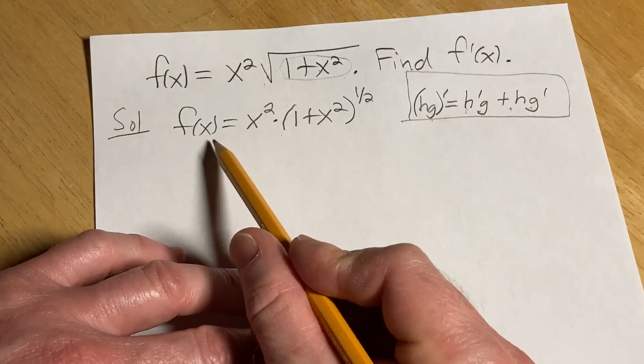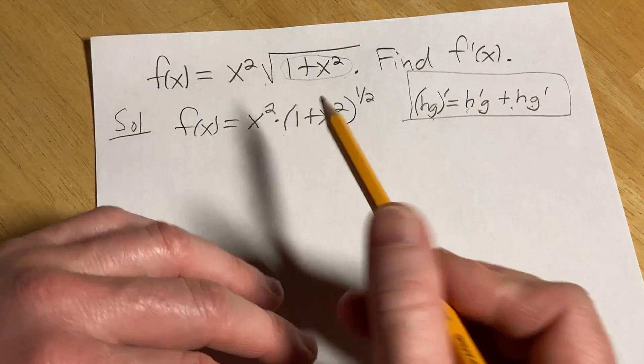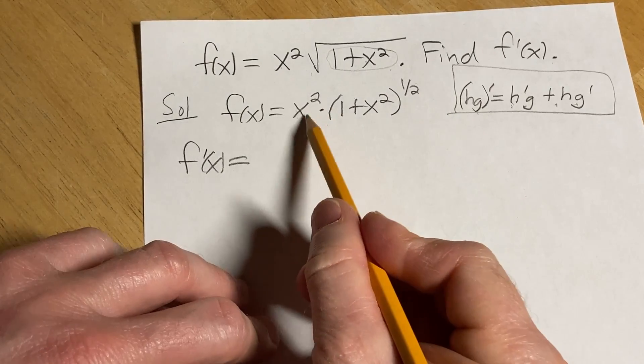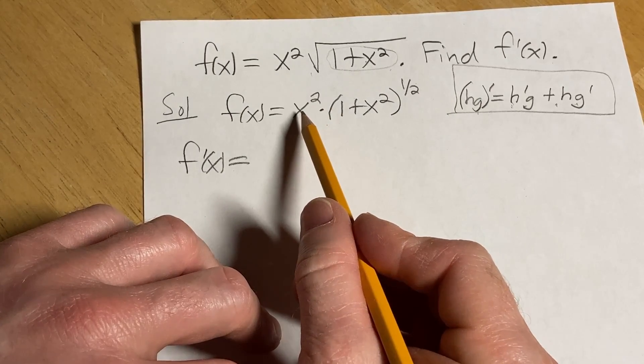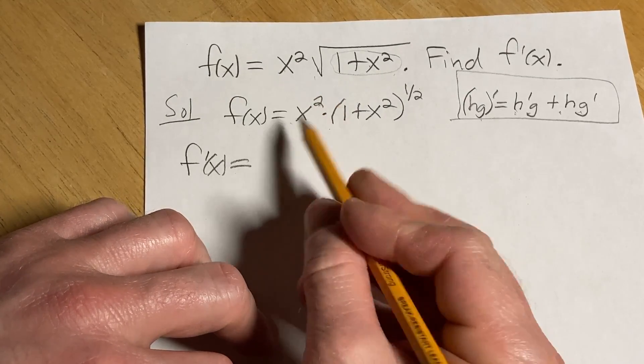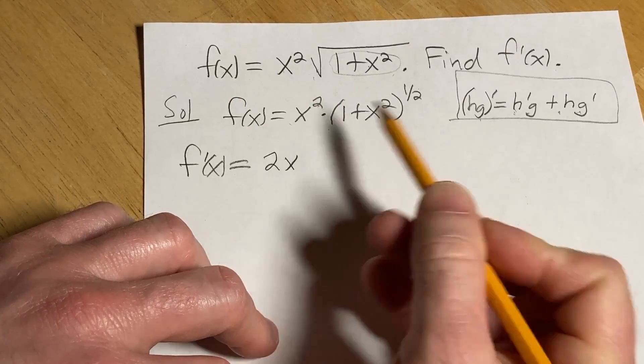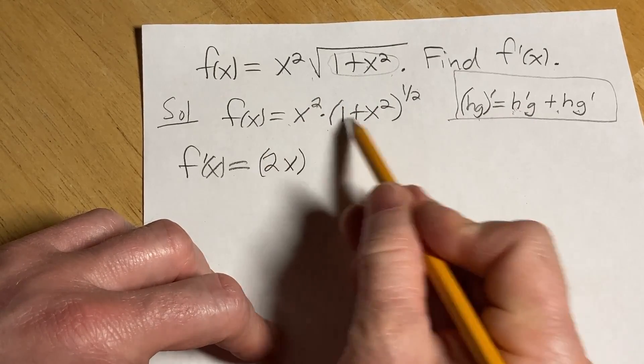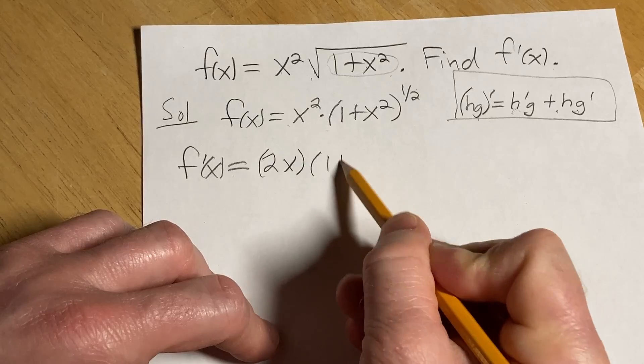So we're going to apply that here to this function f(x). f prime of x. The derivative of the first is the derivative of x squared. This one's really easy. We just use the power rule here. Bring down the 2, subtract 1, we get 2x to the first power which is just 2x. So that's the derivative of the first. That's our h prime. Times the second. So we just write it down again.